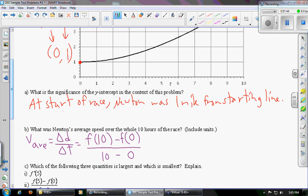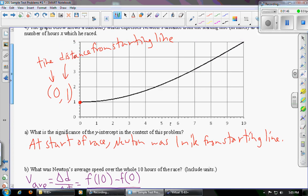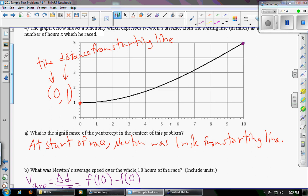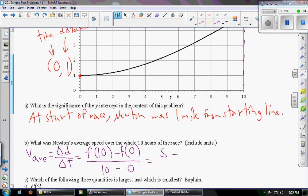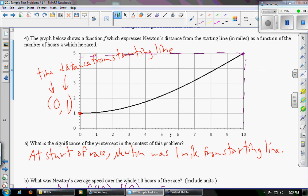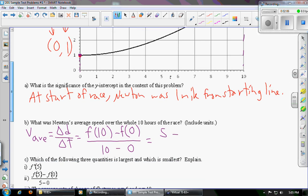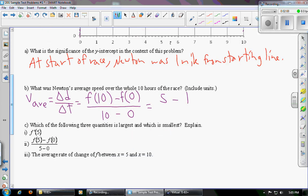So looking at the picture, f of 10, we're going to get right up here. So that's the end of the race. After 10 hours, Newton was 5 miles from the starting line. So this is 5 minus, and then f of 0 is this point right here. After 0 hours, Newton was 1 mile from the start line. So that's a 1 divided by 10 minus 0 is 10. So that means that Newton covered 4 miles in 10 hours.